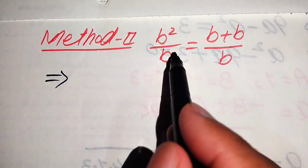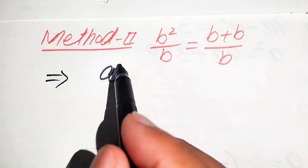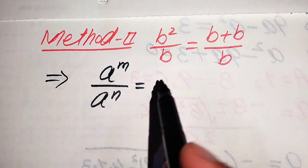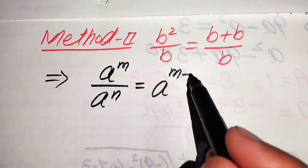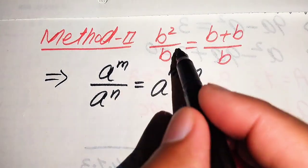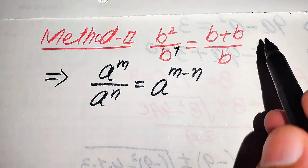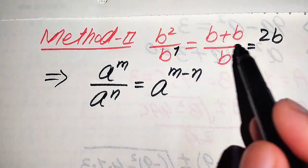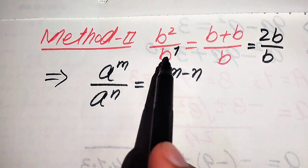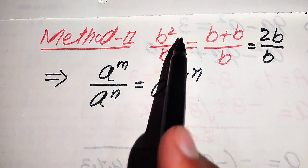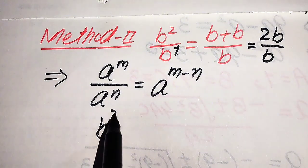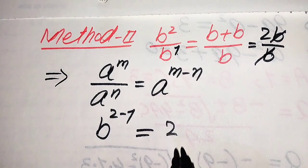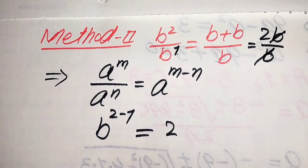Focusing on the left hand side, these two values are divided by each other. We use the exponential law: a to the power of m divided by a to the power of n equals a to the power of m minus n. According to this rule, the exponent of this term is 1. On the right hand side, b plus b becomes 2b divided by b, and the b's cancel, leaving 2.